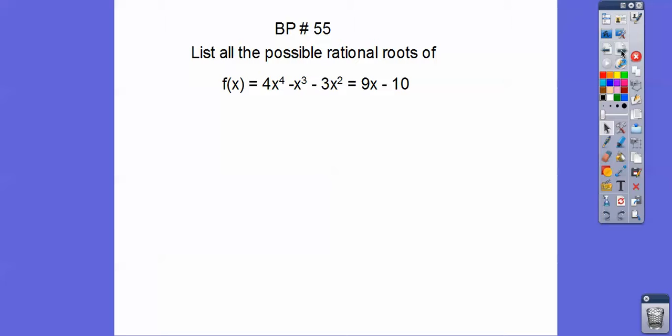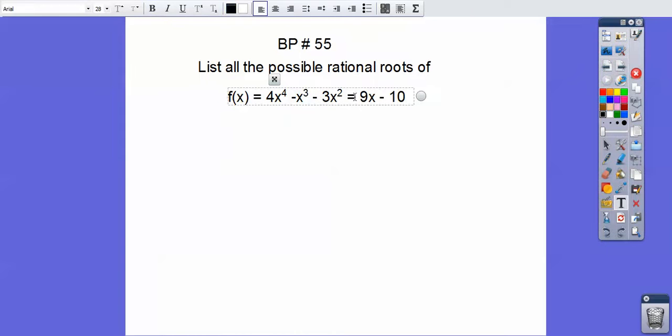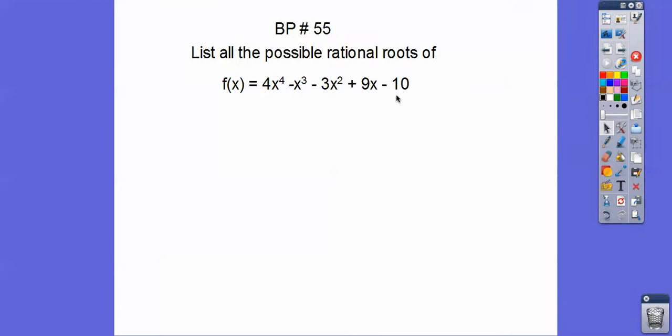Now I'm going to do this board problem here because it helps us in this lesson. So it says find all the possible rational roots. Rational roots means it's a fraction or a form of a fraction. So this will give us the fractional roots or form of a fraction. And there's supposed to be a plus sign right there. So anyways, let me change that to a plus. And then so what we do is we find all the factors of 10 over all the factors of 4.